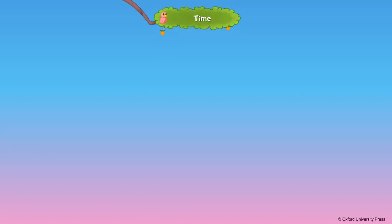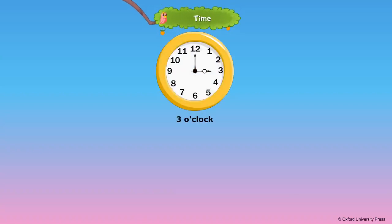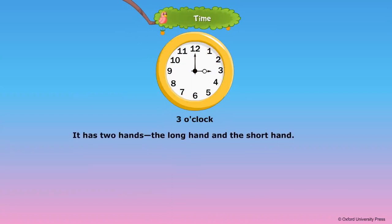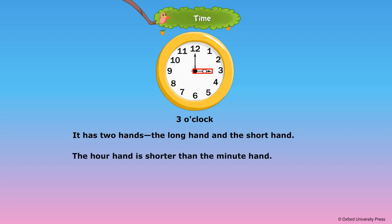Time. A clock has 12 numbers that show the 12 hours of the day. It has two hands: the long hand and the short hand. The hour hand is shorter than the minute hand. The short hand shows the hours and the long hand shows the minutes.